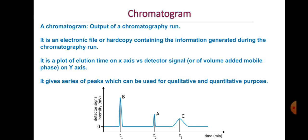The chromatogram is the output of a chromatographic run — an electronic file or hard copy containing information generated during the run. On the x-axis we plot elution time in minutes, and on the y-axis the detector signal or its intensity. It gives a series of peaks which can be used for qualitative and quantitative purposes. For example, three peaks indicate three analytes present in the sample.